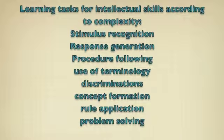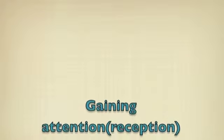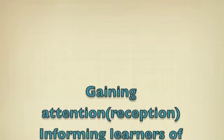The primary significance of the hierarchy is to identify prerequisites that should be completed to facilitate learning at each level. In addition to the sequencing of instruction, the theory outlines nine instructional events and corresponding cognitive processes.